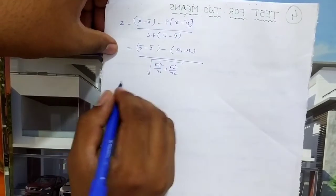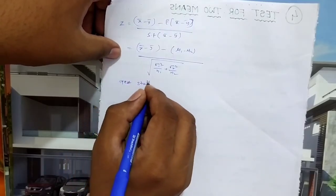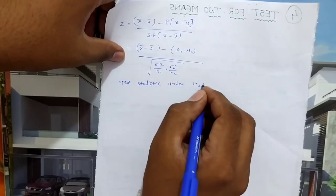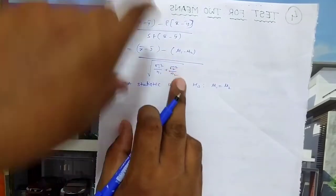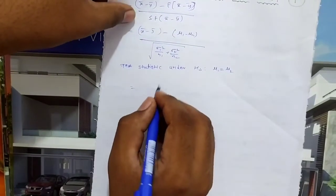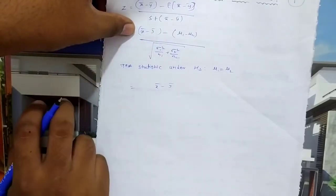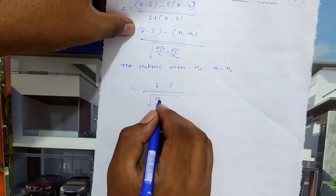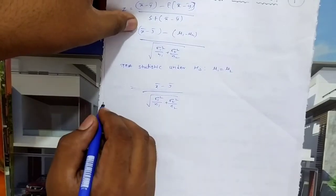Under H0, mu1 equal to mu2, so mu1 minus mu2 cancels. The test statistic becomes Z = (x bar minus y bar) divided by square root of (sigma1 square by n1 plus sigma2 square by n2).